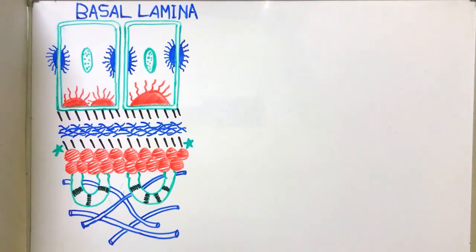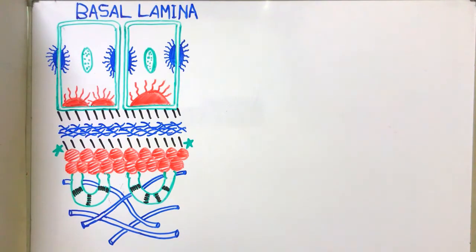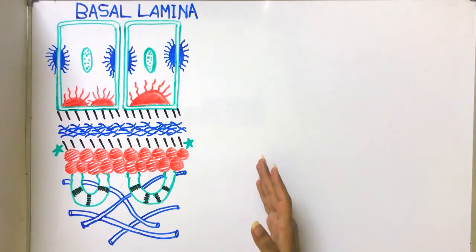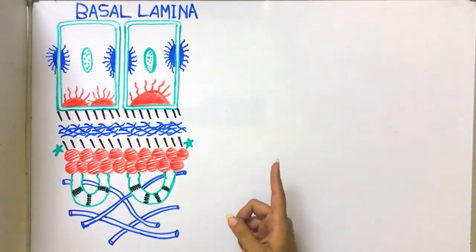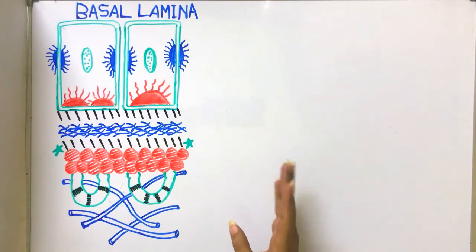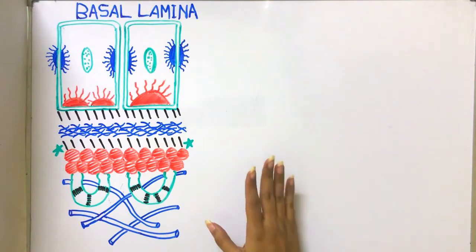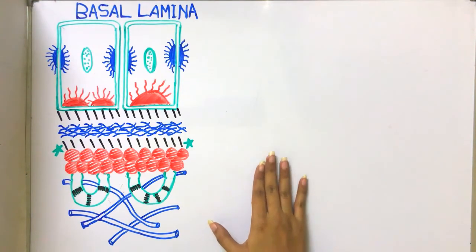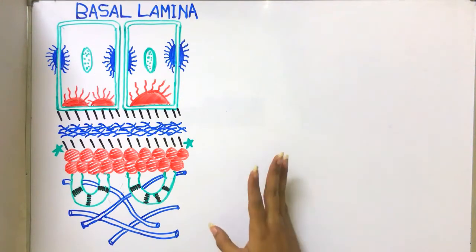Welcome back. Today's topic is basal lamina, in continuation with the previous topic on basement membrane. Basal lamina is a part of the basement membrane — the basal complex. The basal complex has two parts: reticular fibers and basal lamina. It is evident at the electron microscopic level and is of epithelial origin. The basal lamina is made up of two parts: lamina lucida and lamina densa.